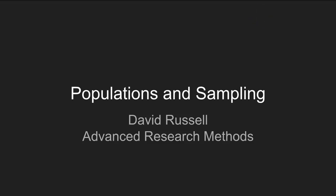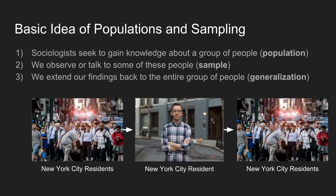In this lecture, I'm going to talk about populations and sampling — how researchers select cases for analysis in their studies. The basic idea is that sociologists seek to gain knowledge about a group of people, and that group of people is referred to as the population.